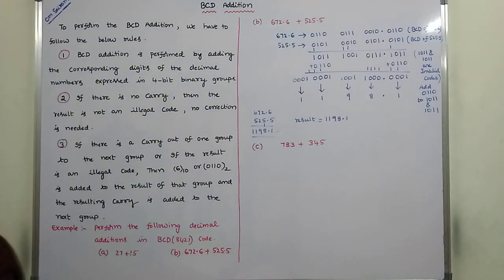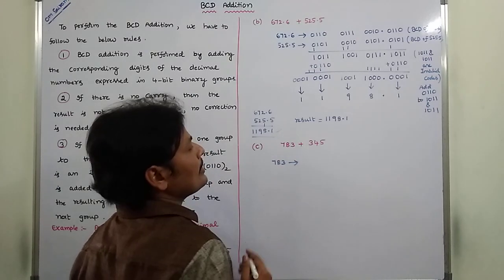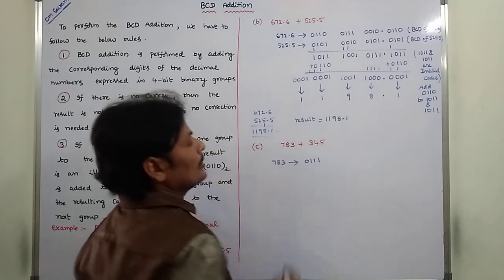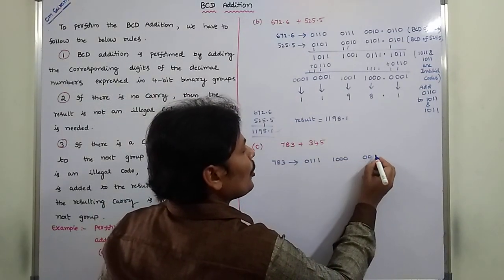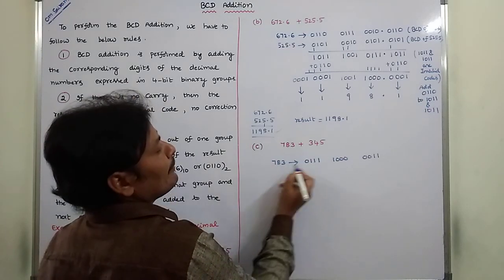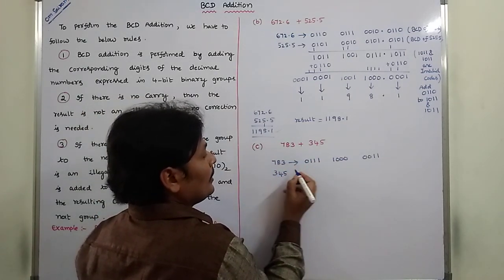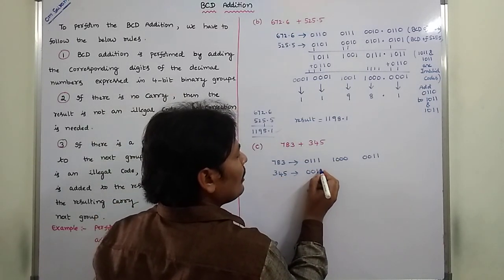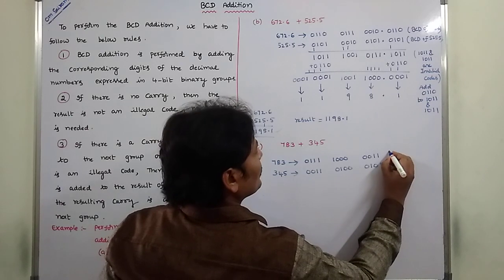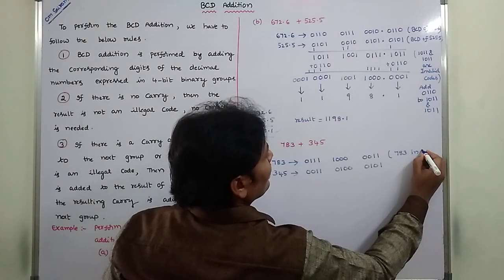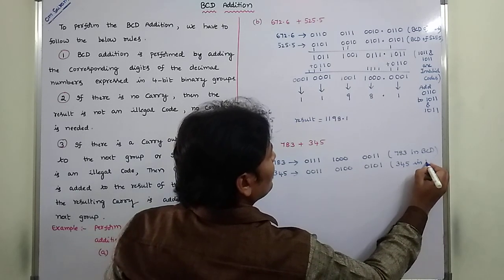783 is represented in BCD as: 7 = 0111, 8 = 1000, 3 = 0011. Each digit is represented by a 4-bit binary group. For 345: 3 = 0011, 4 = 0100, 5 = 0101. This is 783 in BCD and this is 345 in BCD.